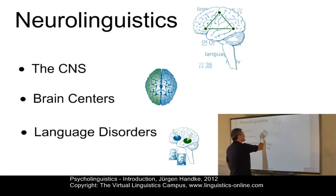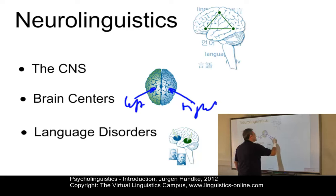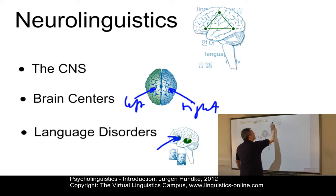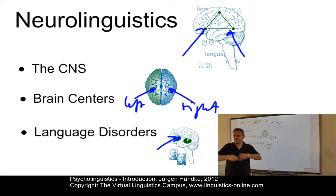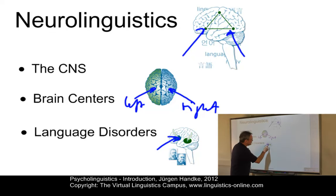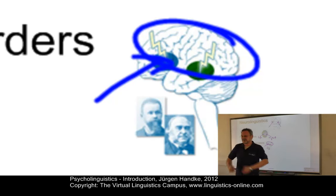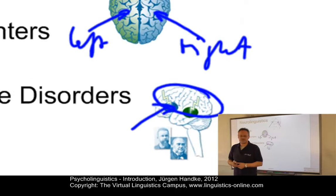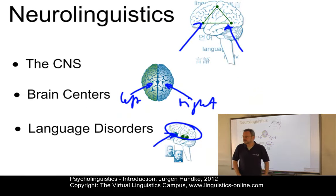Among the questions discussed in neurolinguistics: we have two hemispheres in the human brain — the left hemisphere and the right hemisphere — so what are the central functions of these hemispheres? Are they both equally well employed in the processing of natural language? Are there any brain centers responsible for natural language? What is the effect of brain damage? There are two physiologists of the 19th century, Karl Wernicke and Paul Broca, who first investigated such brain damages. And of course, how does the brain develop during infancy?